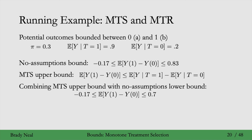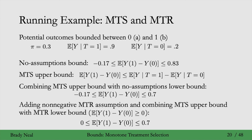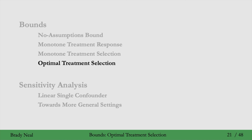We could also make the monotone treatment response assumption in addition to the monotone treatment selection assumption. By combining these two assumptions, we can say that the ATE must be between 0 and 0.7. Note that all of the intervals on this slide still contain 0 — these bounds don't identify the sign of the average treatment effect. We'll soon see bounds that do in the optimal treatment selection section, which is what we have just arrived at.